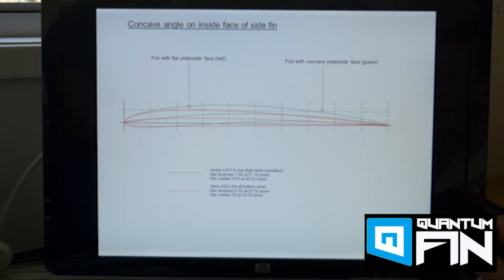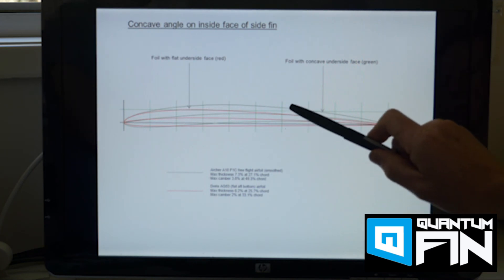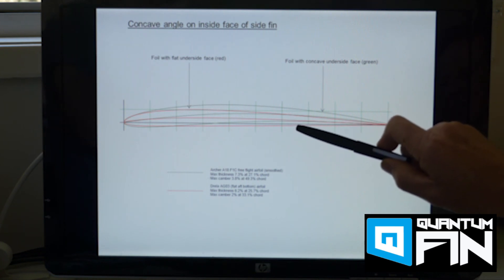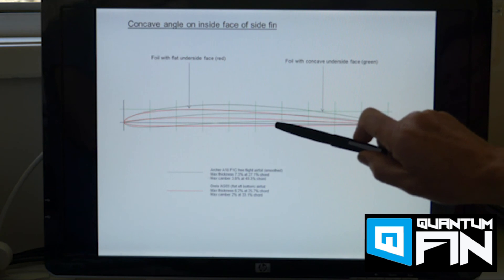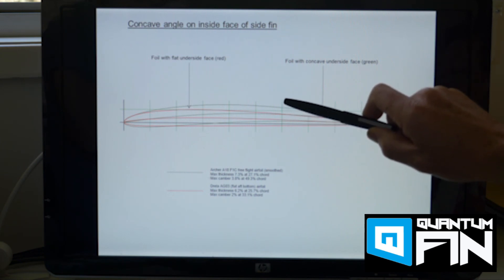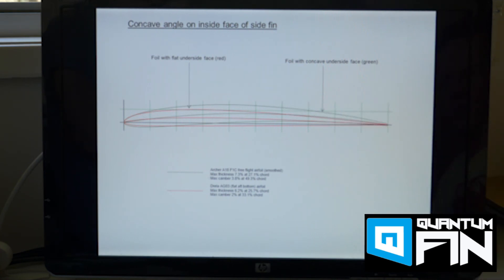So I'll just provide a bit of insight now as to why we chose the foil section that we did particularly for the side fins and what we're looking at here is a plot, two overlays, a red plot and a green plot and we're illustrating here two different foil sections potentially one which has a flat face, so that would be a side fin with a flat inside face and the green plot here being a foil section where it has a more pronounced concave inside face.